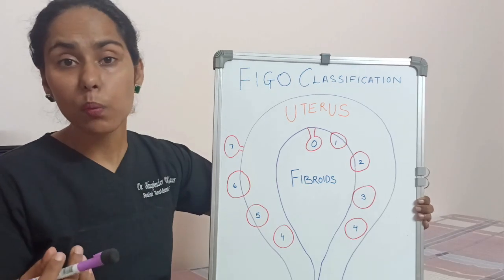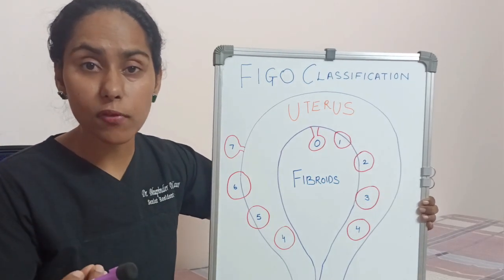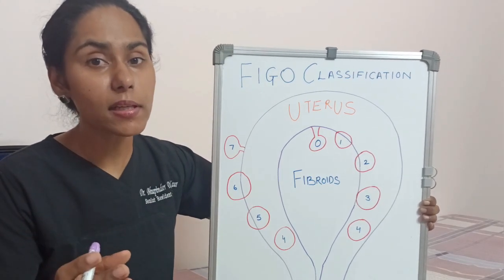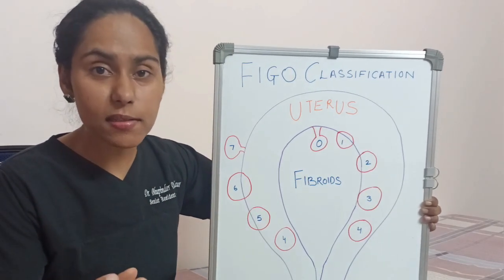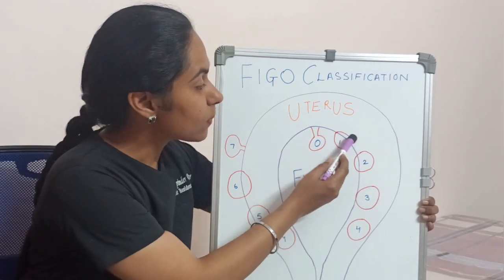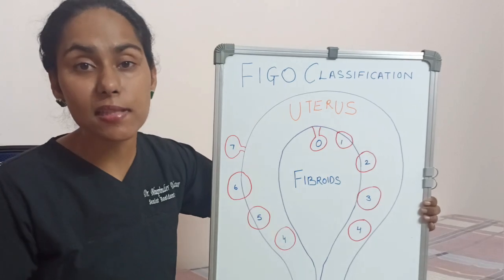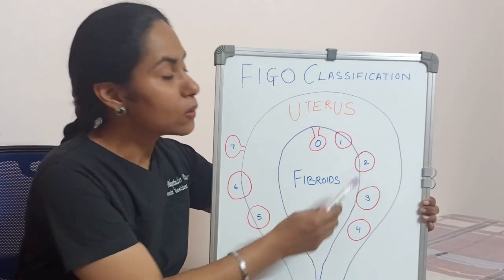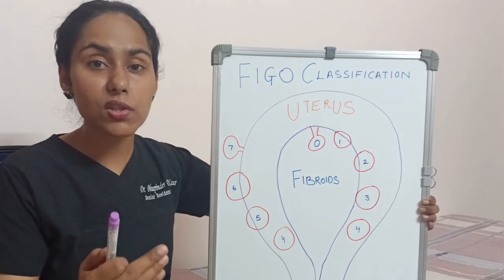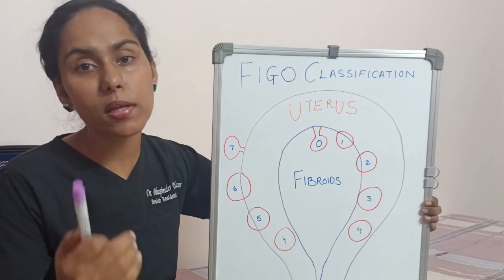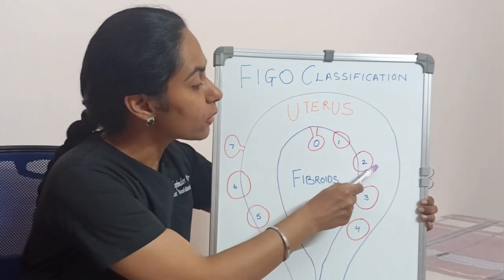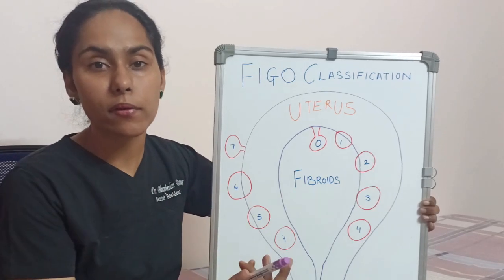Next we have type 1, which is a submucosal fibroid that is also invading the myometrial cavity, and that invasion is less than 50 percent. Type 2 is a submucosal fibroid that has invasion of the myometrial cavity of more than 50 percent — meaning more than 50 percent of this fibroid is towards the myometrium.